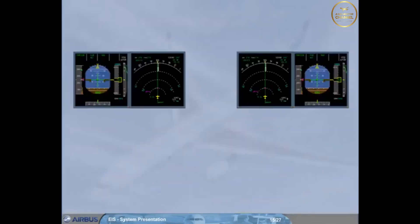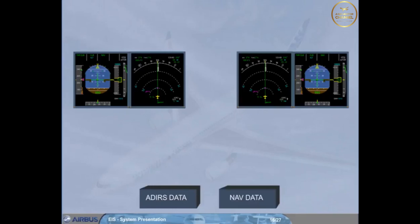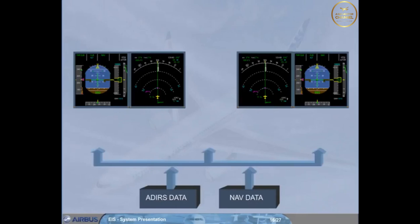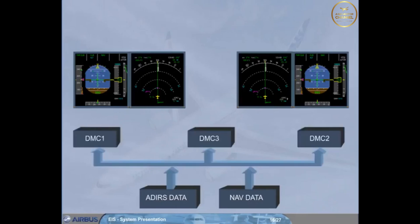Now let's go back to the EFIS system. For the EFIS displays, data from the Air Data and Inertial Reference System, ADIRS, plus navigation data from the Flight Management and Guidance System, FMGS, is fed directly to three Display Management Computers, DMC. Under normal circumstances, DMC1 supplies EFIS information to the captain's PFD and ND, DMC2 supplies the first officer's PFD and ND, and DMC3 is available as a backup. You will see the use of DMC3 in the abnormal operation module.